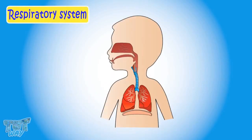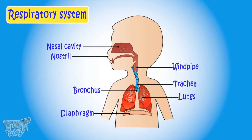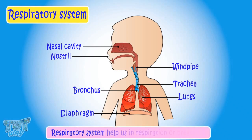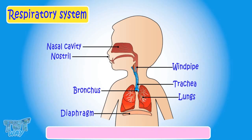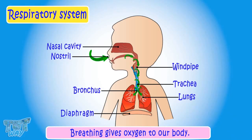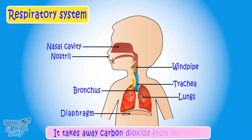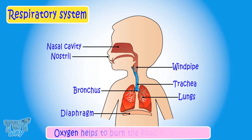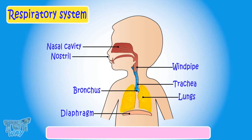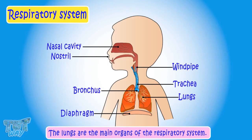Now let's learn about the respiratory system. The airway, lungs, and muscles of respiration form our respiratory system. The respiratory system helps us in respiration or breathing. Breathing gives oxygen to our body and takes away carbon dioxide from our body. Oxygen helps to burn the food to get energy. The lungs are the main organs of the respiratory system.